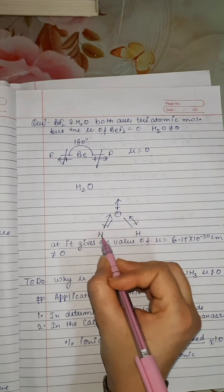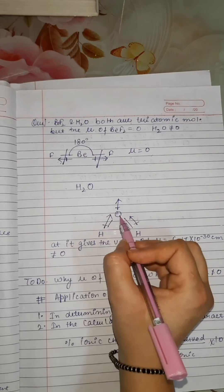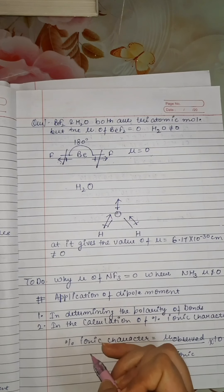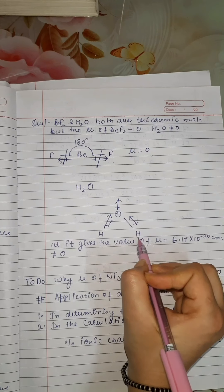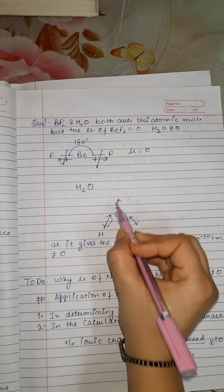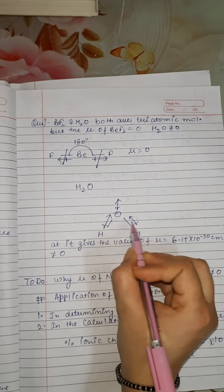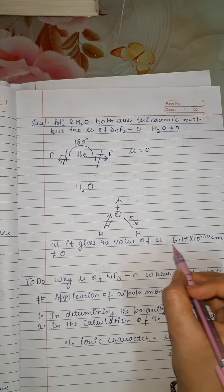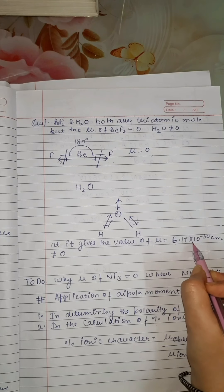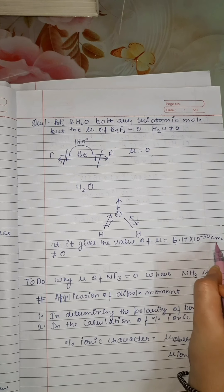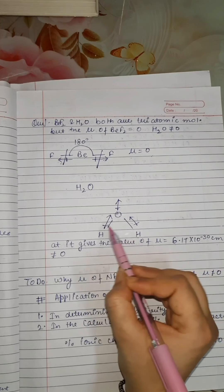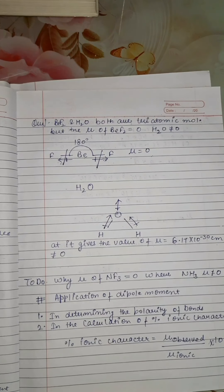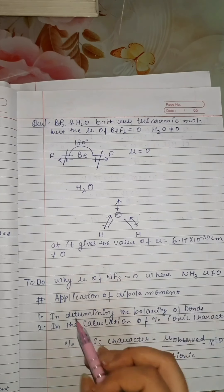In the case of water, it has a bent structure and oxygen is more electronegative than hydrogen. Oxygen attracts the shared pair of electrons of both hydrogens, and the two dipoles add together rather than cancel. This results in a net dipole moment of 6.17 × 10⁻³⁰ C·m, which is not equal to zero due to the addition of the two bond dipoles.